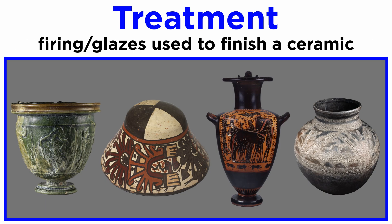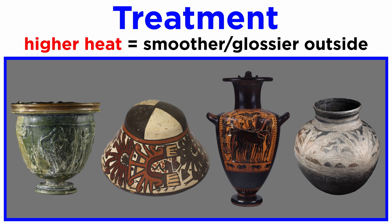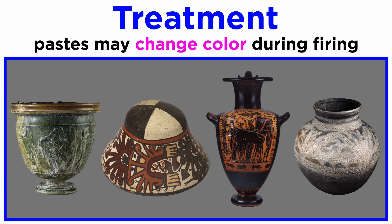Another attribute of ceramics is treatment. This refers to how it was fired and any glazes used to finish the ceramic. Usually, a higher heat treatment will result in a smoother and glossier outside. Different pastes also change color based on the temperature that was used in firing the piece.